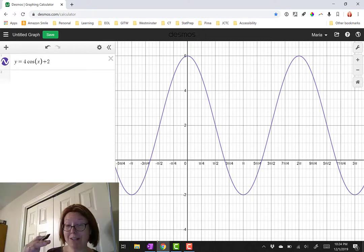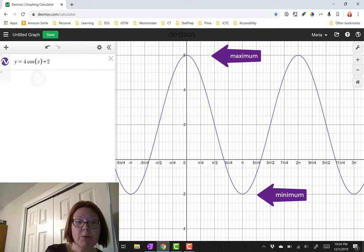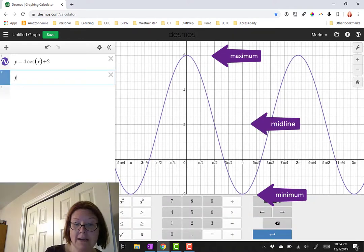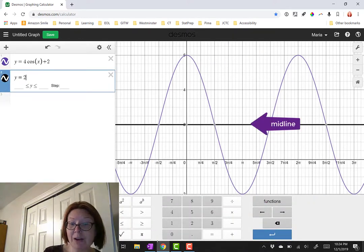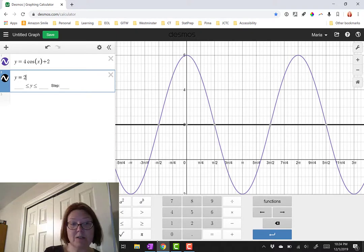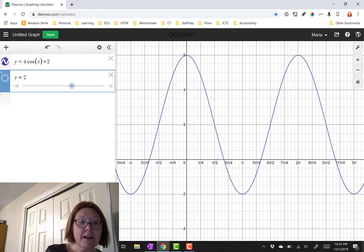The midline would be the horizontal line halfway between the minimum and maximum. The minimum was at negative 2 for a y value and the maximum is at 6, which would put our midline at y equals 2. And we can graph it just to make sure that looks appropriate, which it does.